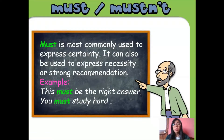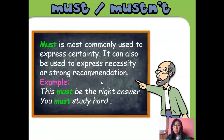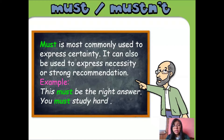We are going to start with the use of must. Must is most commonly used to express certainty. It can also be used to express necessity or strong recommendation. It means that we are going to use must in order to show an obligation or a strong recommendation. Here we have an example: 'This must be the right answer.' 'You must study hard.' We are going to use must in order to express an affirmative sentence — to express an obligation.